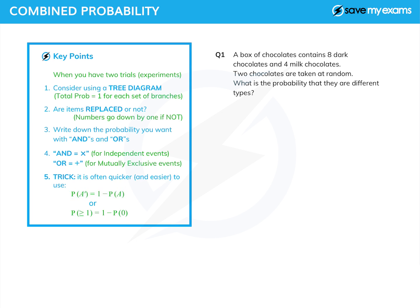So let's apply this to some questions. Here we have the box of chocolates with eight dark chocolates and four milk chocolates in it. So that's 12 in total. And two chocolates are taken at random. Now it very clearly says they're both taken out at the same time, but we treat that as one after the other without replacement. So these are clearly not replaced. And we're asked what the probability is that they are different types.